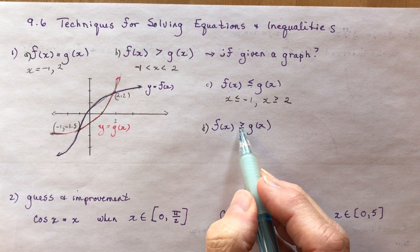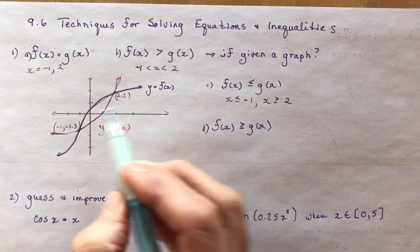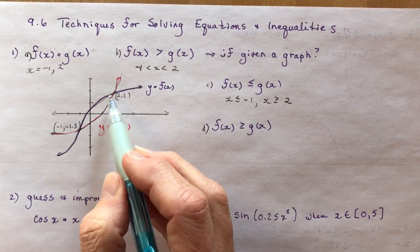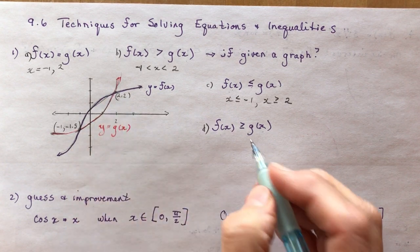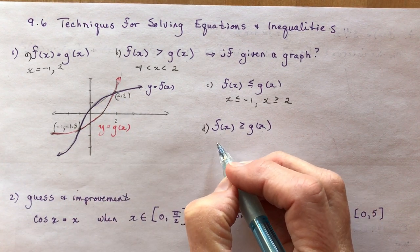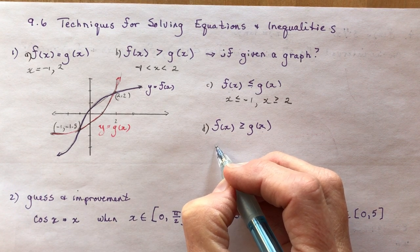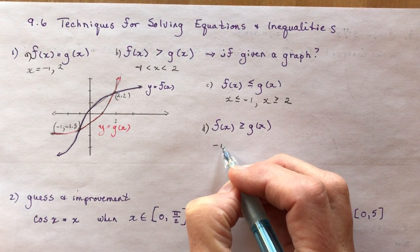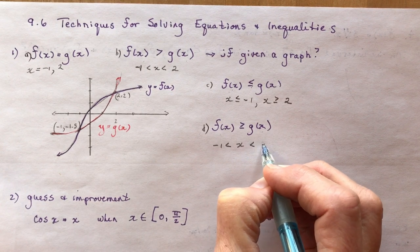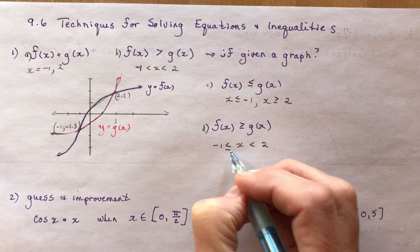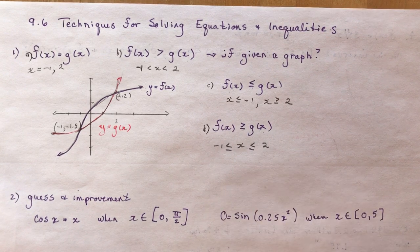Where is f(x) greater than or equal to g(x)? That's right between the two intersection points — you can see the y-values are higher in that zone where x is between -1 and 2. We include the equal sign, so we use less than or equal to for the boundary values.